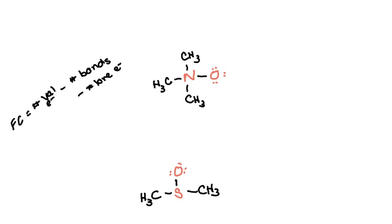If we start with nitrogen, it has five valence electrons. Here it has four bonds and zero lone electrons, so it has a plus one formal charge.